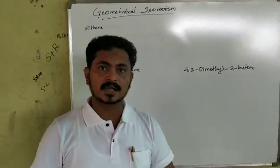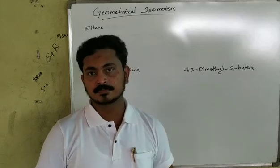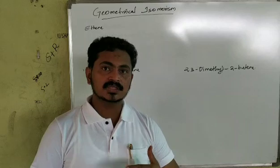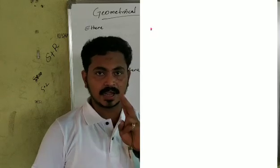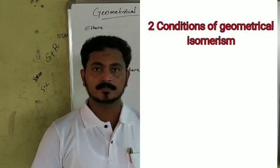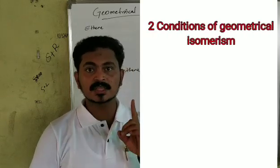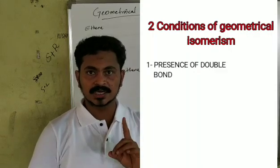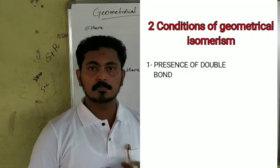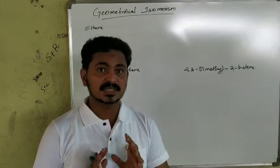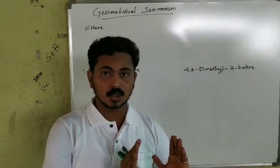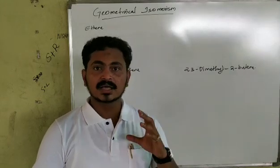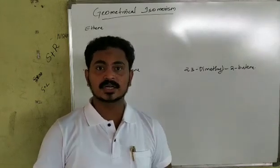I am going to tell you about Geometrical Isomerism, giving specific organic compounds as examples. The main condition for Geometrical Isomerism is the presence of a double bond. From an entrance exam point of view, we call this restricted rotational motion.